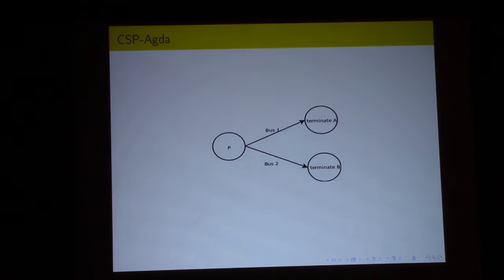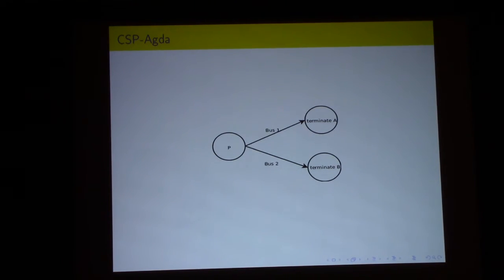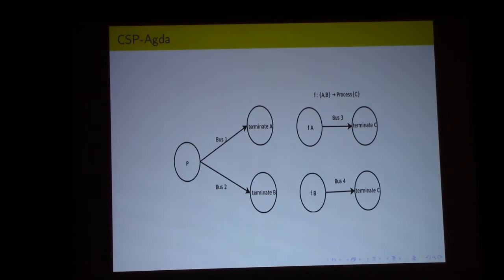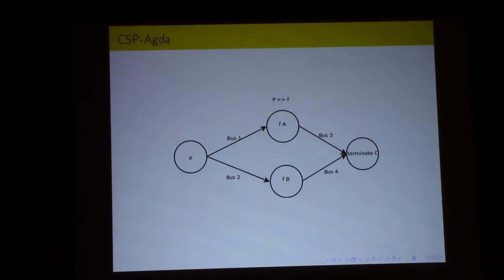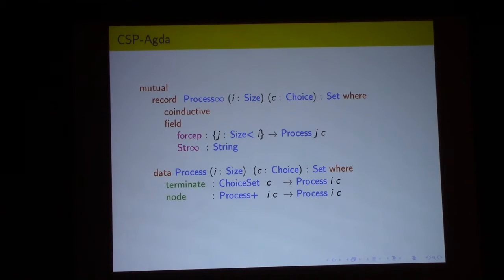If process P proceeds with the bus event it terminates and returns result A, and with the next event it terminates and returns result B. If we want to combine processes using sequential or monadic composition — composing P with function FA or FB — the combined process first executes P, then according to the result returned when P terminates, performs the next event and terminates returning result C.